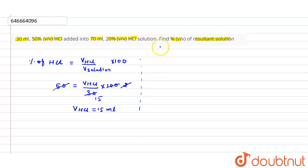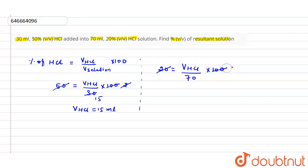For the second solution, the percentage is given as 20% and the volume of solution is 70 ml. Using the same formula and cancelling, the volume of HCl = 14 ml.